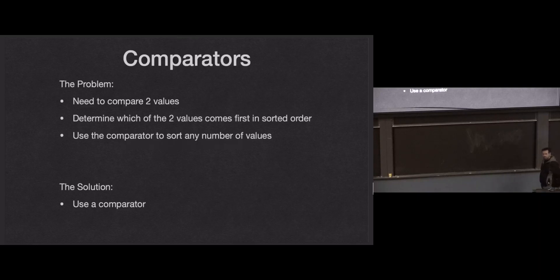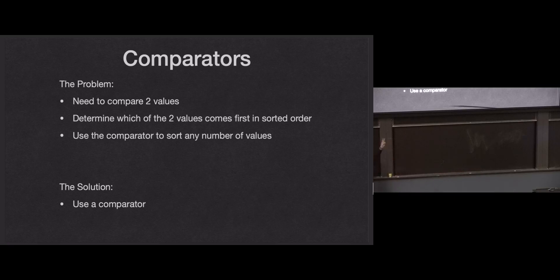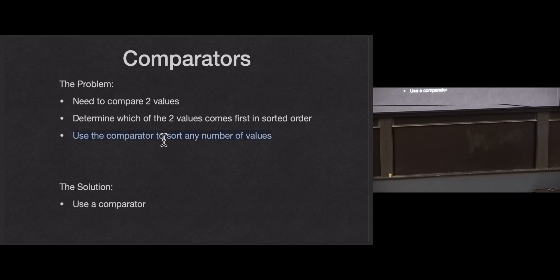Let's talk about comparators. Our problem that we want to solve is that we want to compare two values. A comparator is going to take two values and tell us their relative order as though it were in a full sorted order. We want to eventually use our comparators to get the full sorted order of any number of values, and we're going to do that by writing code that will only compare two values. We'll see how to write our comparators first, and then use that to sort any number of values.